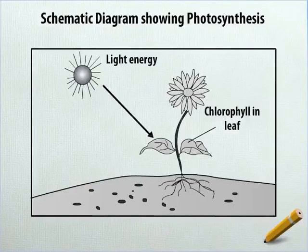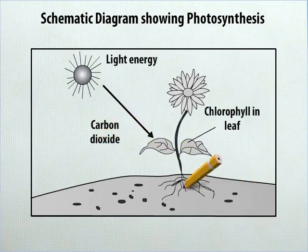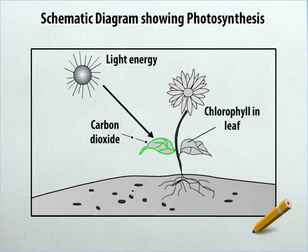On the left-hand side of the sheet, below the circular structure, write carbon dioxide. From this text, draw two small arrows pointing towards the left leaf of the plant.